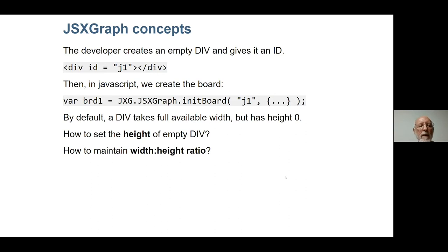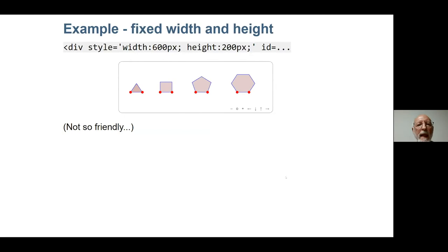A key thing we normally want to do is maintain the width-to-height ratio of our JSXGraph object, so that everything looks the same in each screen resolution. Typically what most people do is set things up with a style element — for example, width 600 pixels and height 200 pixels — but I'm going to show you something better.